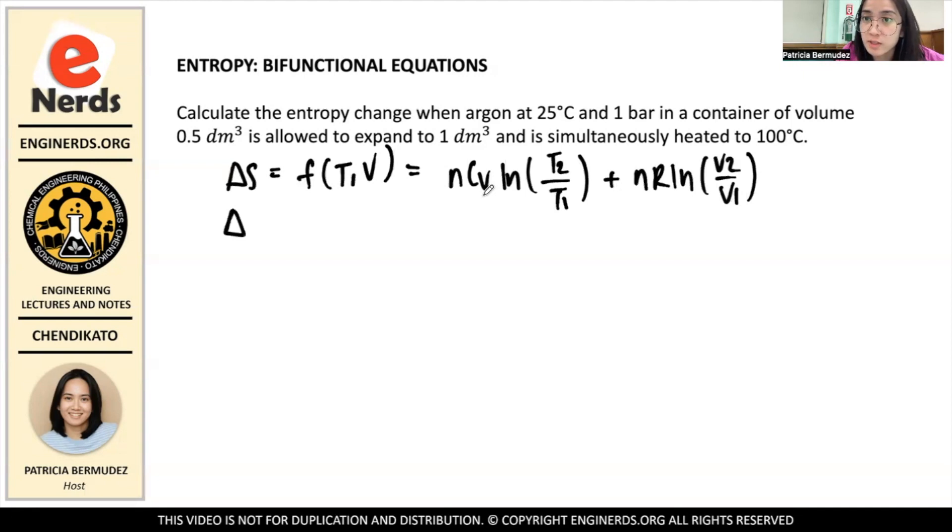So Cv is present because you assume first a constant volume, and then after that constant temperature, and then you add them together.